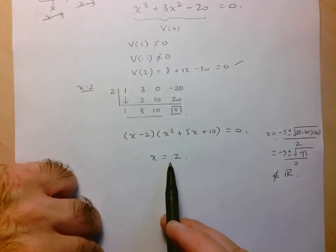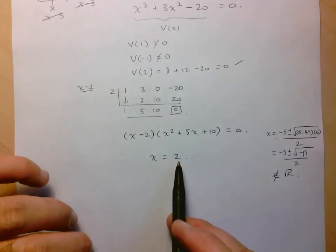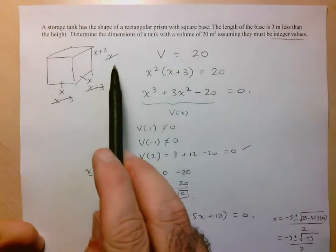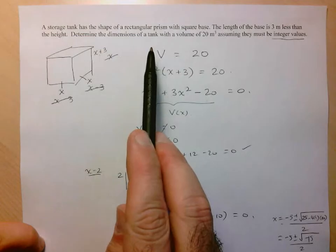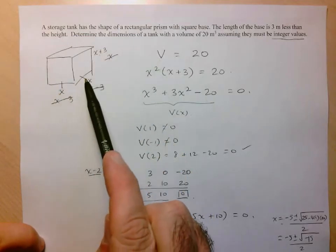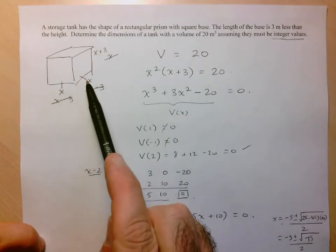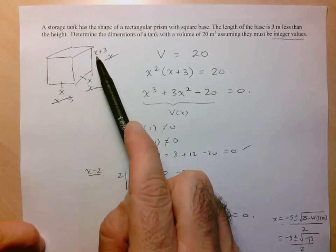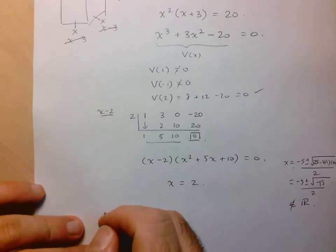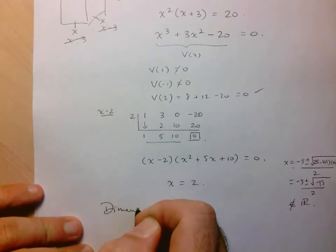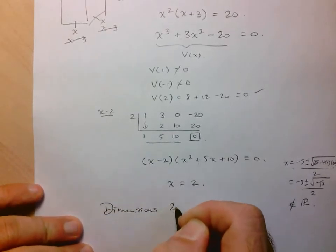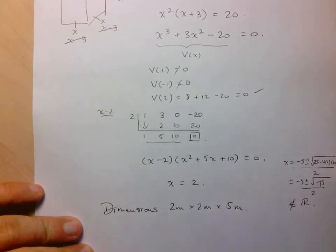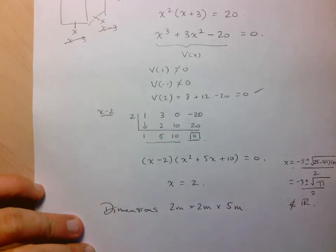And since it's an integer value, it fits with the conditions on this question. But what they want is the dimensions of the tank. So x equals 2, that was representing the base length and width, and then the height would just be 2 plus 3 is 5. So here, if we write out our answers, the dimensions would be 2 meters by 2 meters by 5 meters.